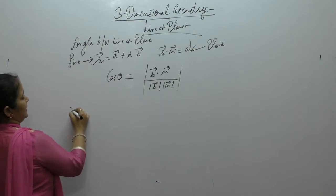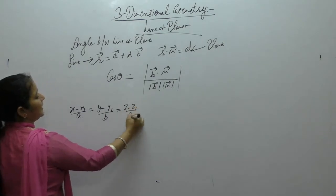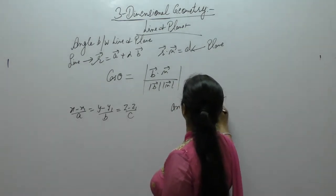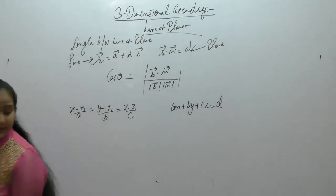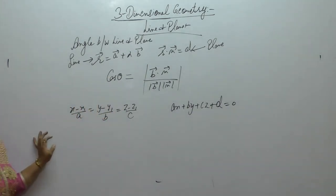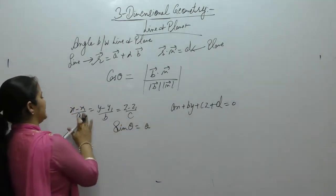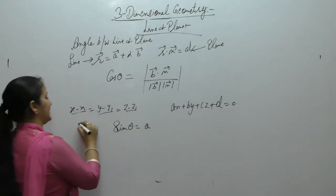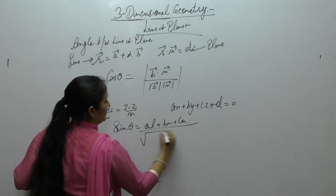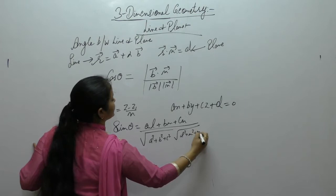Now, if the Cartesian form is given, line is X minus X1 upon A, Y minus Y1 upon B, Z minus Z1 upon C. And the plane has equation AX plus BY plus CZ plus D equals to 0. Then, the angle between them. Here we have ABC. So, instead of ABC in the line, we will write it as LMN. So, AL plus BM plus CN upon square root of A square, B square, C square, L square plus M square plus N square.